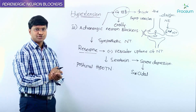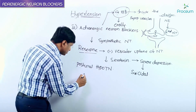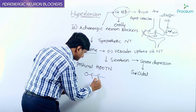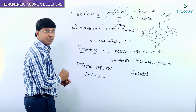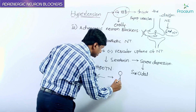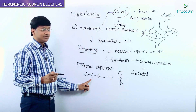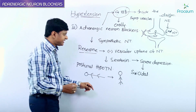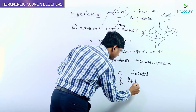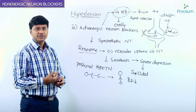Postural hypotension means that whenever an individual moves from the supine position into a standing position, there is a fall in the blood pressure.